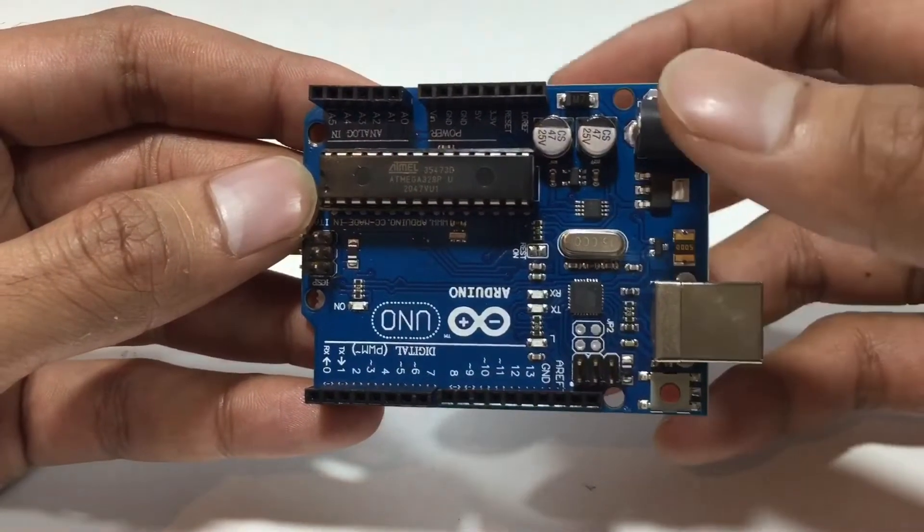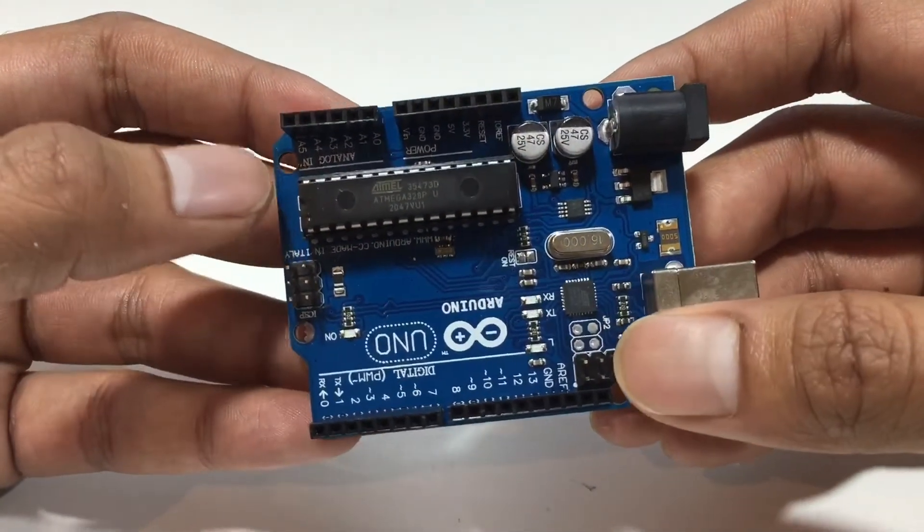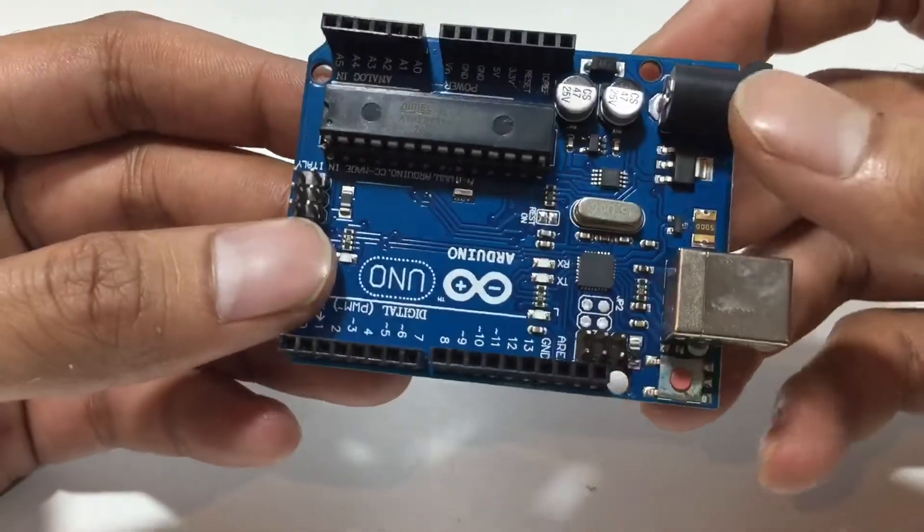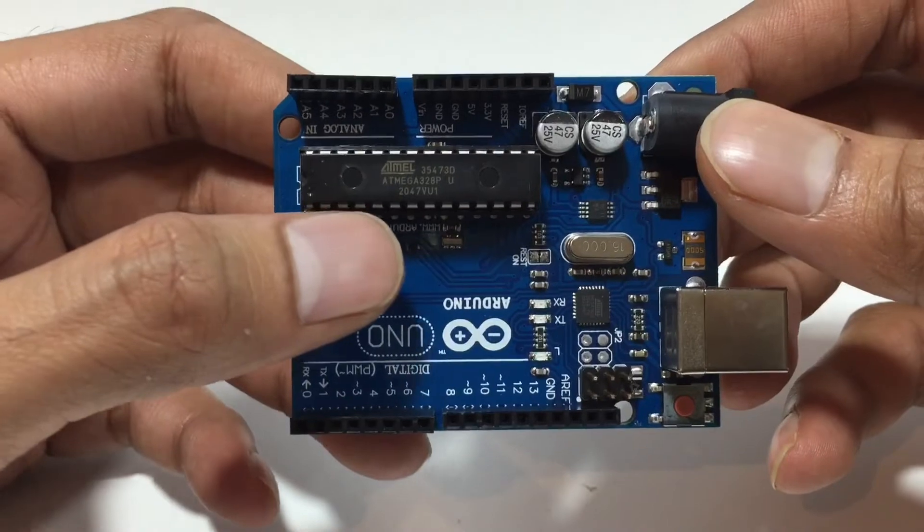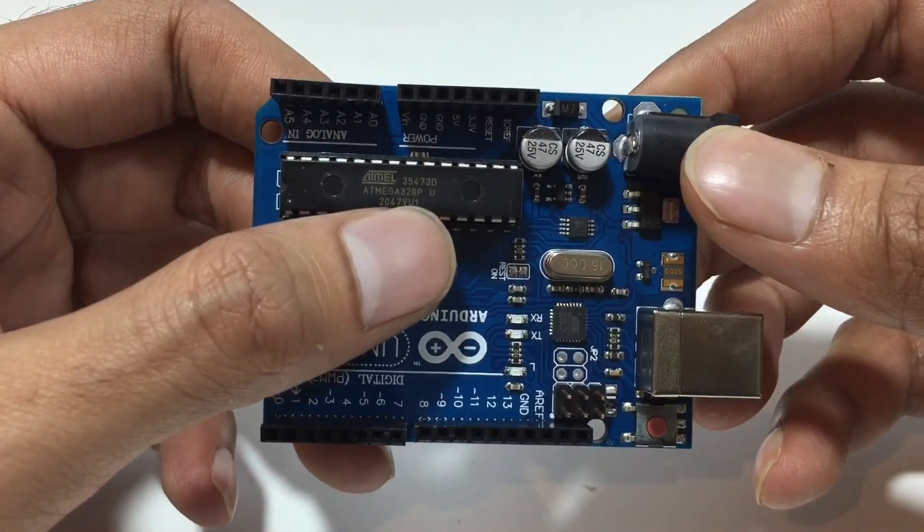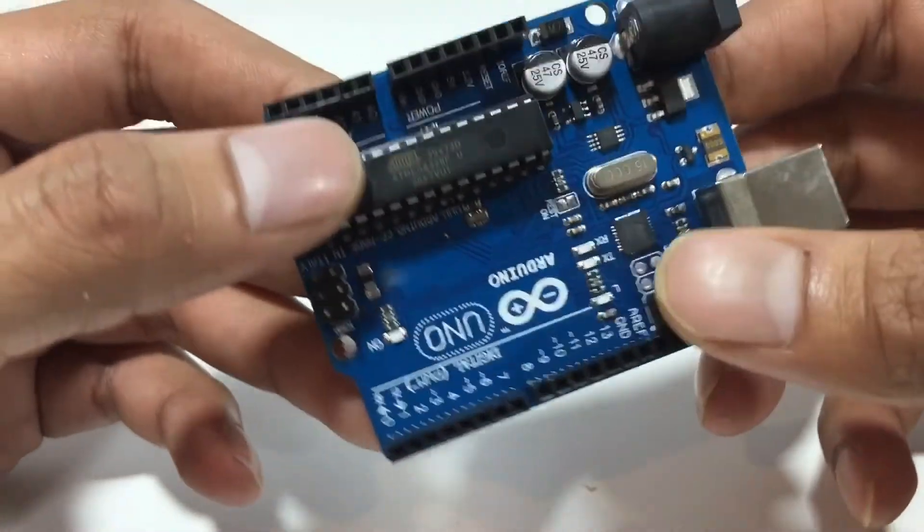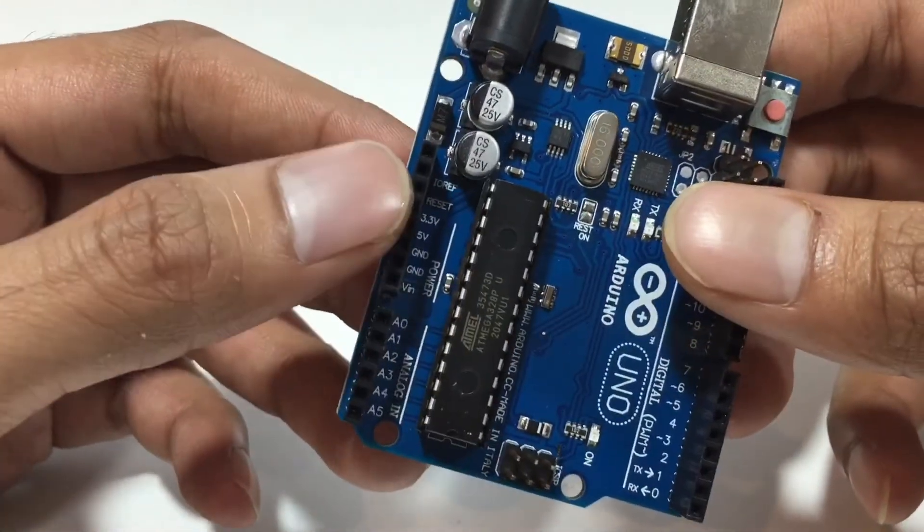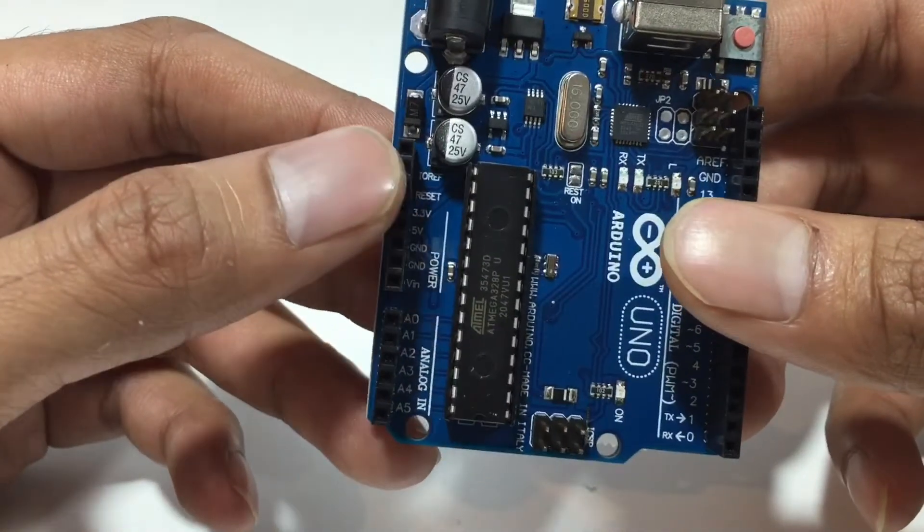So the first and most important component needed for this project is Arduino Uno. You can see this is Arduino Uno. Here is the microcontroller, ATmega328p. This Arduino operating voltage is 5V and input recommendation voltage is 7-12V.